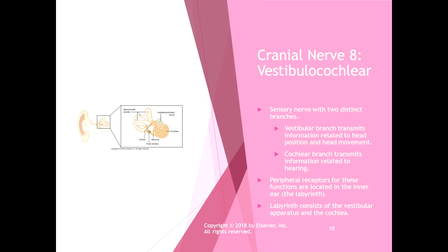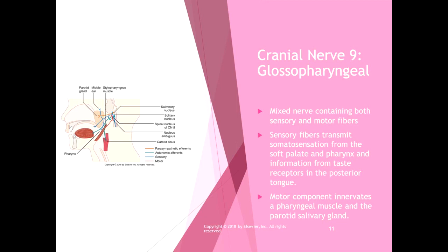Cranial nerve eight is the vestibulocochlear nerve. It has two distinct branches: the vestibular branch transmits information related to head position and head movement from the vestibular apparatus in the inner ear, and the cochlear branch transmits information related to hearing from the cochlea in the inner ear. The peripheral receptors are located in the inner ear — the labyrinth consists of the vestibular apparatus and the cochlea — two very distinct functions running on the same nerve.